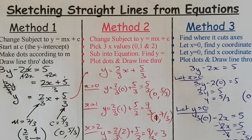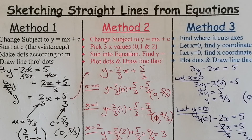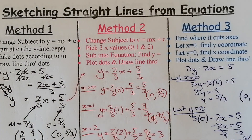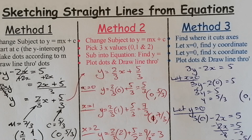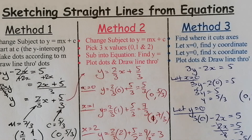I've shown you three methods for drawing a straight line from its equation. You can choose whichever method suits you best. Watch out for negative signs, make sure you can solve the equations, and plot your points and draw your line carefully. Good luck with your National 5 work on this topic. In the next video we'll move on to using the equation y minus b equals m times bracket x minus a.